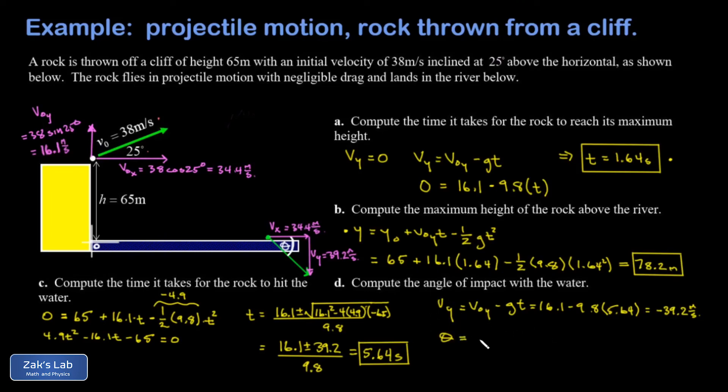This requires an inverse tangent. So θ is the angle whose tangent is 39.2 (that's the opposite side) over 34.4 (the adjacent side). And we arrive at an impact angle of 48.7 degrees below the horizontal, and we're done.